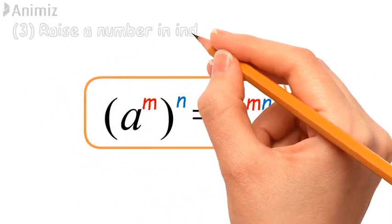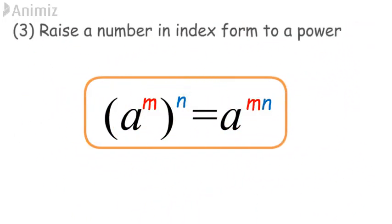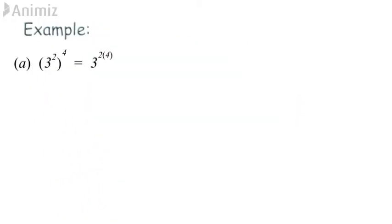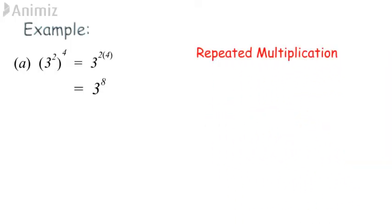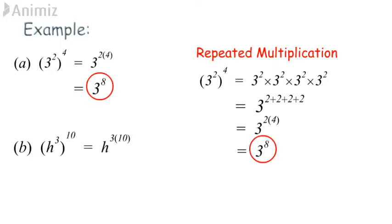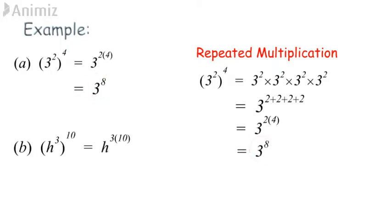Third law: raise a number in index form to a power. Example A: 3² raised to the power of 4 — the index 2 × 4 = 8, giving 3^8. Using repeated multiplication, 3² multiplied 4 times becomes 3^(2+2+2+2). Example B: h³ raised to the power of 10 — the index 3 × 10 = 30, giving h^30.